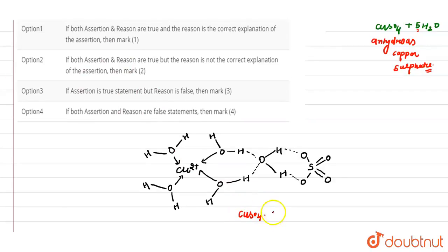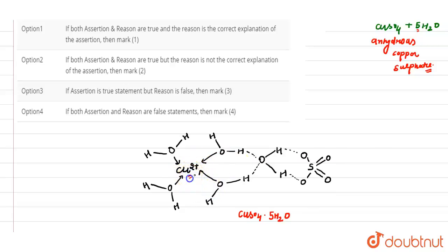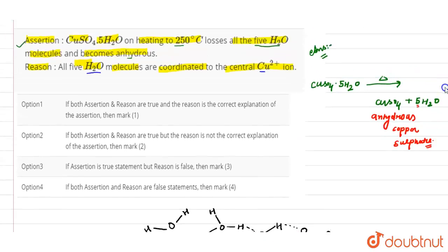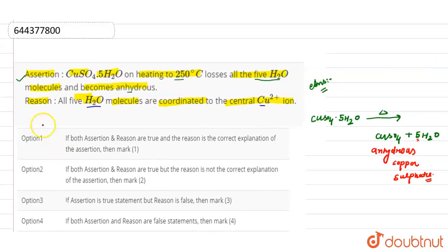In the reason it is stated that five water molecules are coordinated to the Cu²⁺ ion. However, looking at the structure, we can count: one, two, three, and four — only four water molecules are coordinated to the copper 2+ ion. So the reason given here is incorrect.